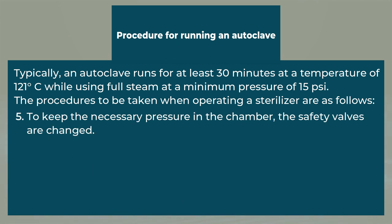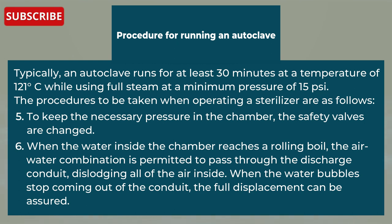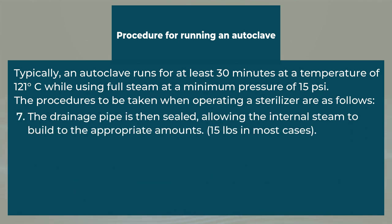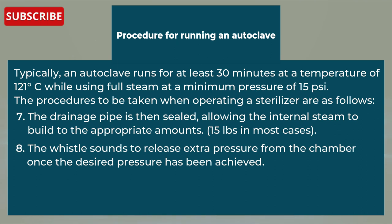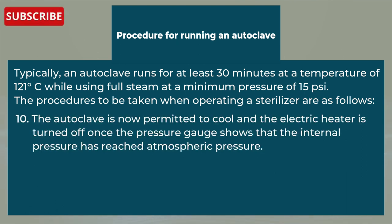Fifth, change the safety valves to keep the necessary pressure in the chamber. Sixth, when the water inside the chamber reaches a rolling boil, the air-water combination is permitted to pass through the discharge conduit, dislodging all of the air inside — when the water bubbles stop coming out of the conduit, full displacement can be assured. Seventh, the drainage pipe is then sealed, allowing the internal steam to build to the appropriate amounts. Eighth, the whistle sounds to release extra pressure once the desired pressure has been achieved. Ninth, the autoclave runs for a holding time after the whistle, typically 15 minutes. Tenth, the autoclave is permitted to cool and the electric heater is turned off once the pressure gauge shows the internal pressure has reached atmospheric pressure.